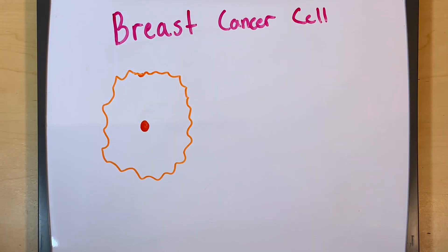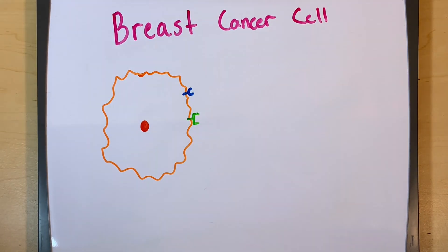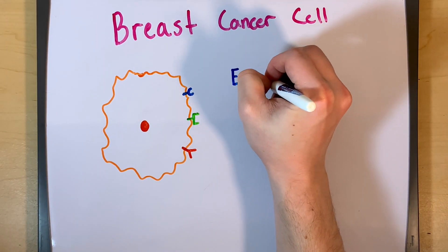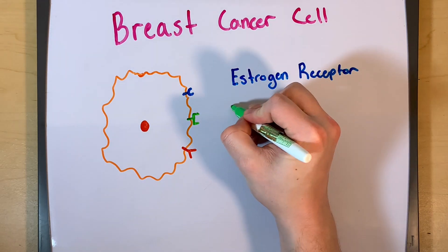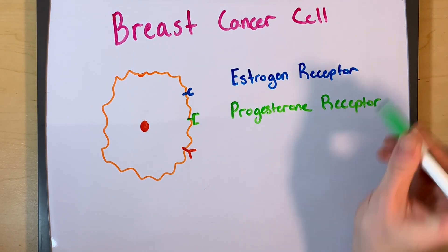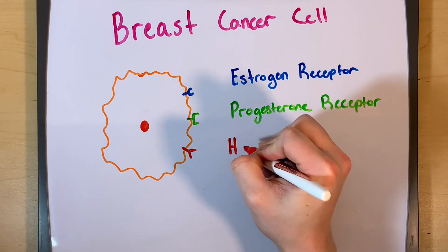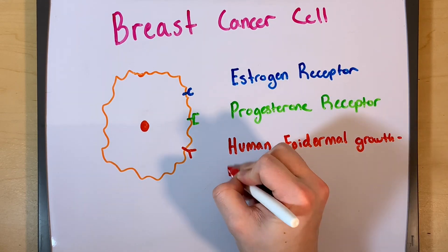When talking about receptors and hormone therapy, the three most important receptors on a breast cancer cell are the estrogen receptor, the progesterone receptor, and the human epidermal growth factor 2 receptor.